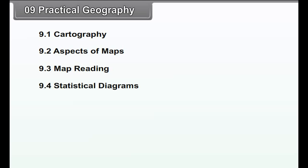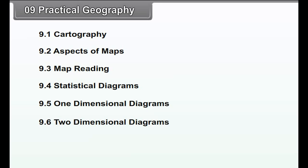Chapter 9: Practical Geography. We will study the following points in this chapter: 9.1 Cartography, 9.2 Aspects of Maps, 9.3 Map Reading, 9.4 Statistical Diagrams, 9.5 One-Dimensional Diagrams, 9.6 Two-Dimensional Diagrams.